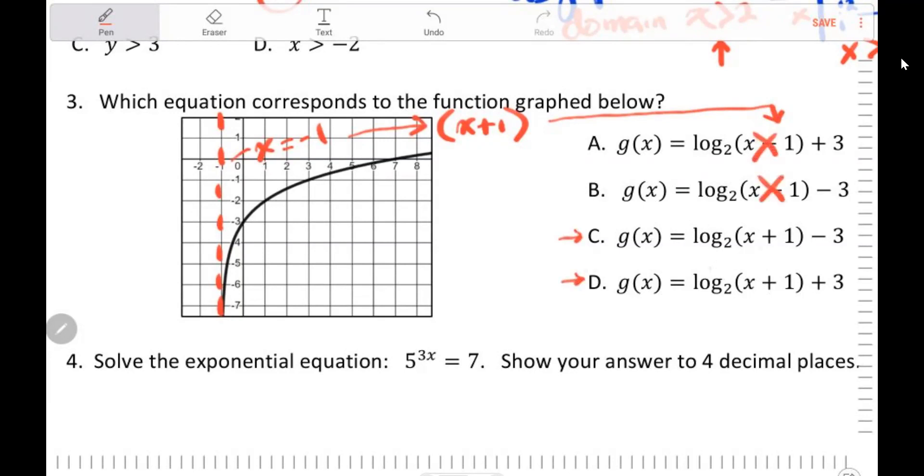So how do we tell which one of these is the right one? The next thing we do is look at the y-intercept. There's the y-intercept right there, and it is 0 minus 3.